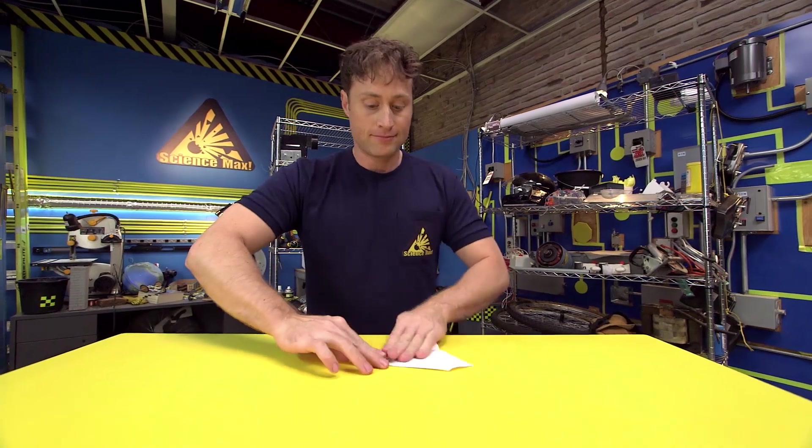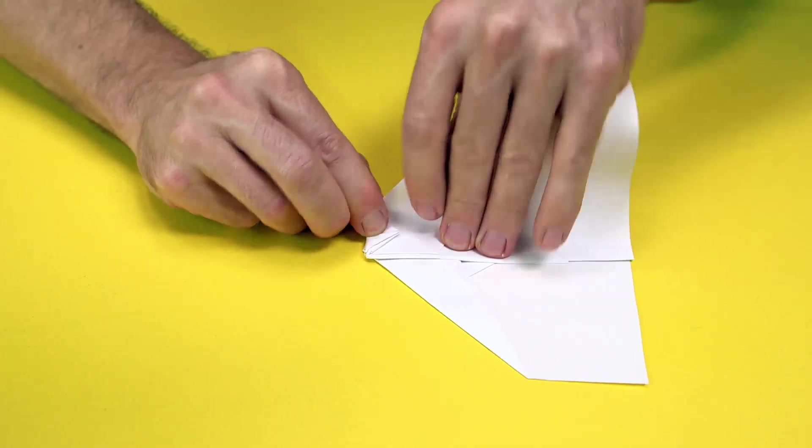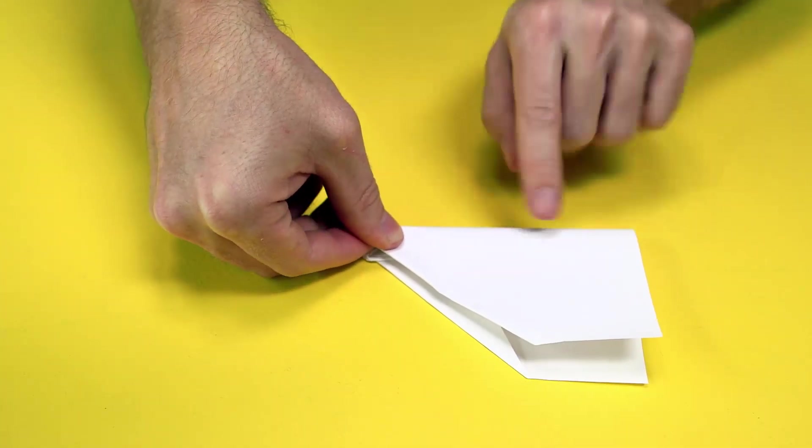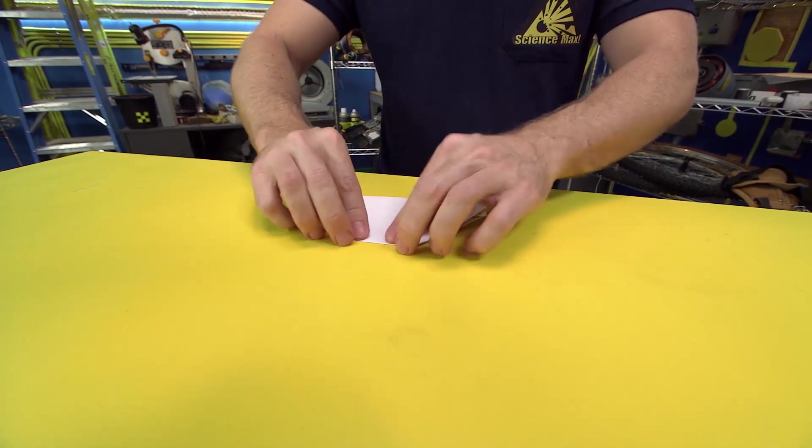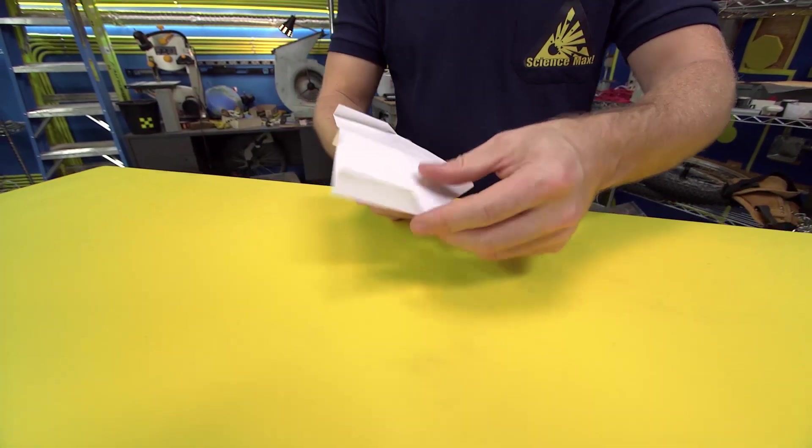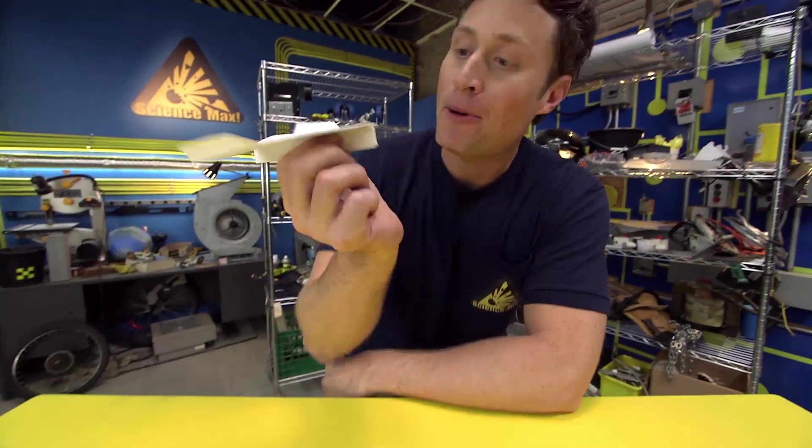Then fold the wings down like this. And like this. And here's the extra special bit. We're gonna use some stabilizers on this plane. Fold up the stabilizers on the ends of the wings. And ta-da! The Sky King paper airplane fold.